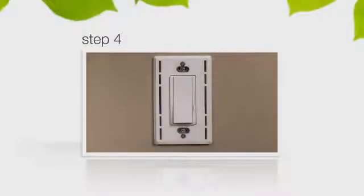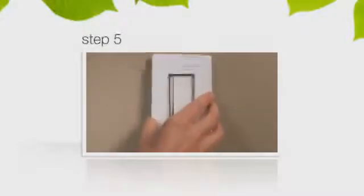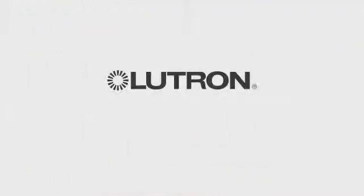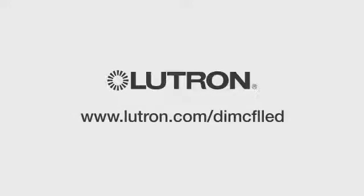After you have set the dial, you won't need to adjust it again until you replace a bulb. Once all of the bulbs are dimming properly, you can install the faceplate. For more information, visit Lutron.com/dimCFLLED.